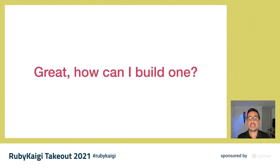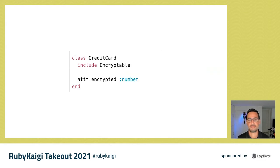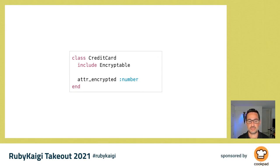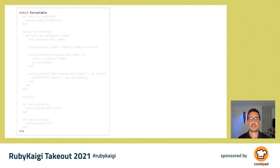Now that we know what DSLs look like, let's see how we can build something like that. Imagine we're writing an application that deals with sensitive data which needs to be encrypted as soon as the data is populated. We want some kind of an encrypted version of attr_accessor, but we want to encapsulate the logic in a single place — that will be the Encryptable module. The way we want to use it: declare a CreditCard class, include the Encryptable module, which gives us access to the attr_encrypted method, and call that method with a symbol representing the attribute name we want.